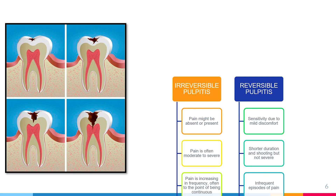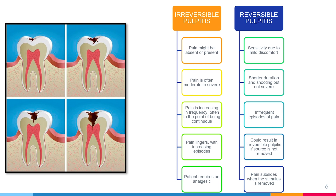In irreversible pulpitis, pain may be absent or present, is often moderate to severe, increasing in frequency to the point of being continuous, and the patient usually requires analgesics. In reversible pulpitis, the patient typically has sensitivity rather than severe pain, with shorter and infrequent episodes. The pain subsides when the stimulus is removed, but if the source is not addressed it can result in irreversible pulpitis.